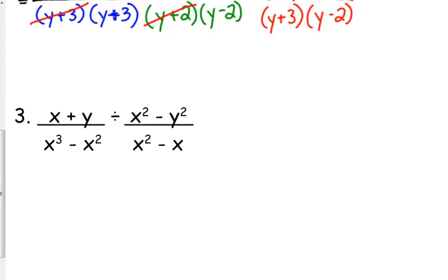We've got two more examples, and then you get to give it a go. x plus y over x cubed minus x squared divided by x squared minus y squared over x squared. We can have more than one variable. We've factored stuff like this before. That first numerator can't be factored - x plus y is in its simplest form. The first denominator has a GCF of x squared. When we take out x squared, we get x minus 1.